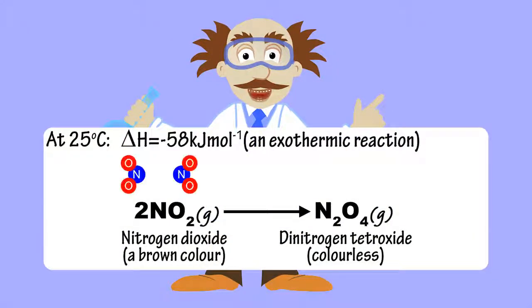At room temperature, two molecules of the brown gas nitrogen dioxide, or NO2, readily combine to form a molecule of the colorless gas dinitrogen tetroxide, or N2O4, in what is an exothermic reaction.